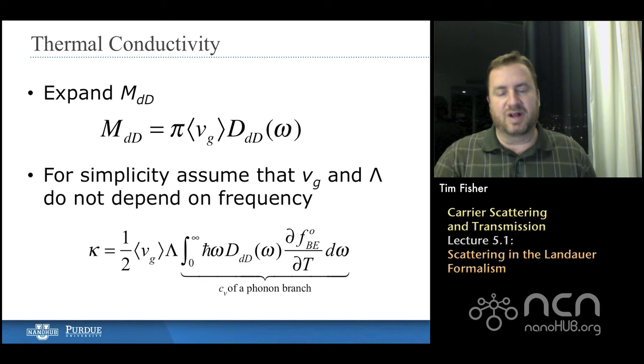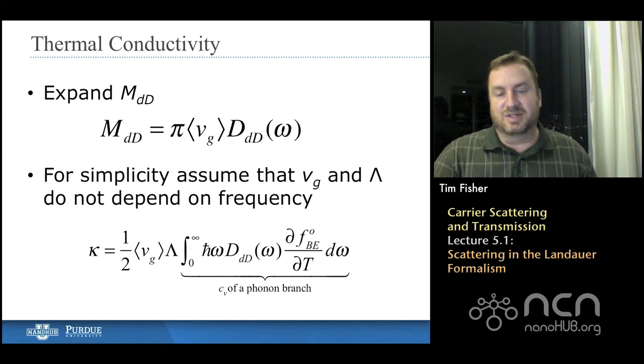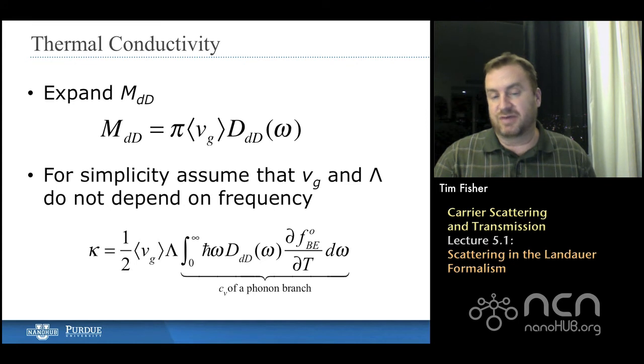One of them is the group velocity, in this case it's the average group velocity in the direction of interest, and the mean free path, that's capital lambda, and then that entire integral, if you go back from when we were studying specific heat, that's actually just the specific heat of a single phonon branch in the dimensionality, whichever dimensionality of the problem you're interested in. That's the lowercase d in the subscript on the density of states.